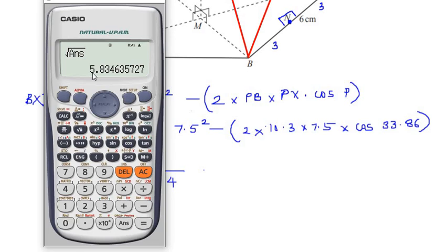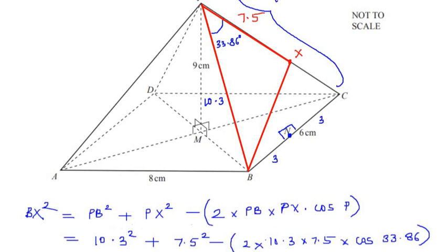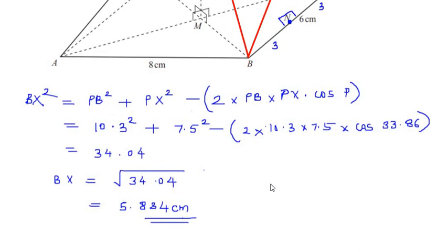So BX is 5.834 centimeters. To find BX, we first used the trigonometric ratio sine to find the full angle BPC, and then used the cosine rule to find side BX. I hope you have understood all the steps and liked my video. If you are liking my videos, please like, share, and subscribe to my channel. Thank you for watching.